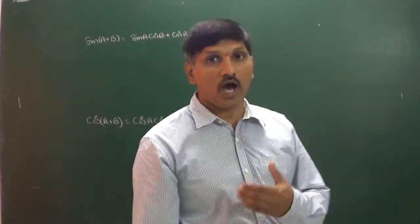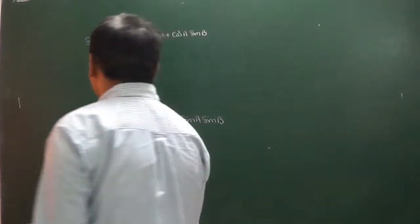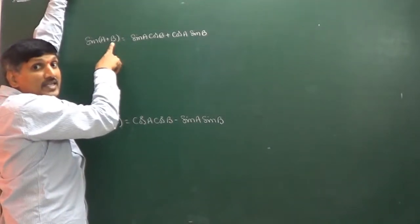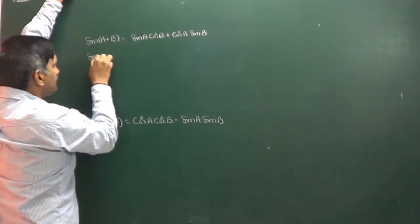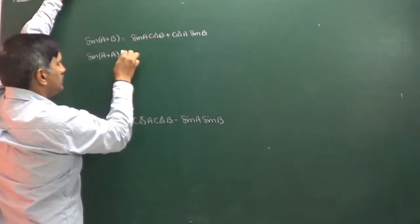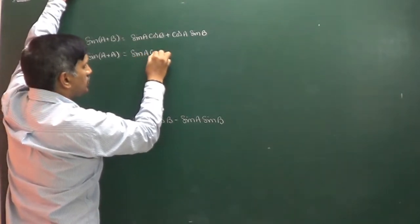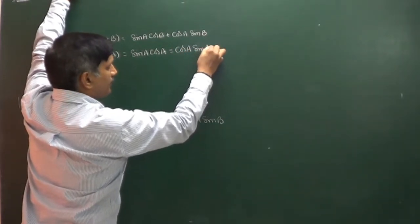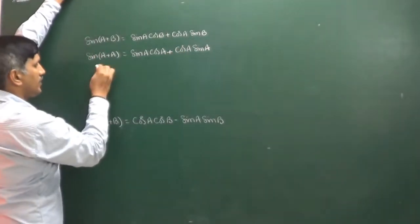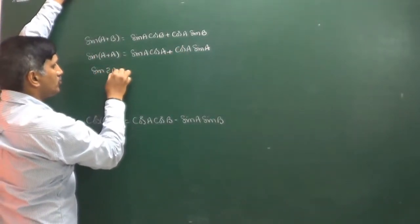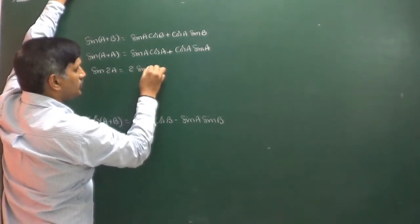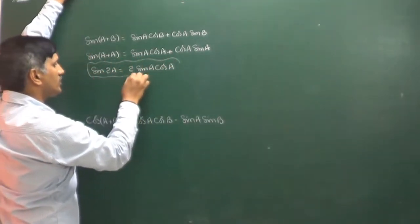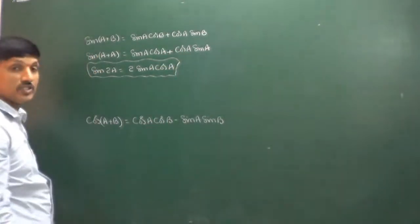Based on these formulas, I am going to discuss a few more formulas. Here, what I am doing first is replacing B with A. Then sin(A+A) = sinA·cosA + cosA·sinA. So sin(A+A) gives sin(2A), and sin(2A) = 2sinA·cosA. That is the formula for sin 2A.